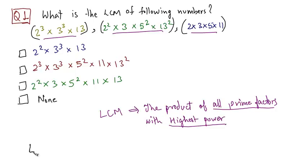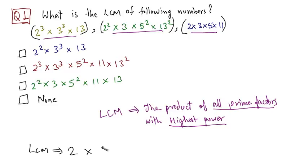So LCM would be equal to the product of all prime factors. All of the prime factors are 2, 3, 13, 5, and 11. So 2 into 3 into 5 into 11 into 13.